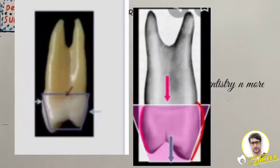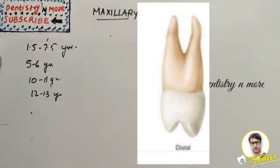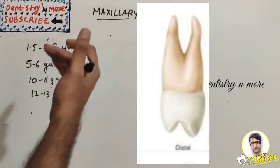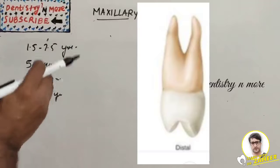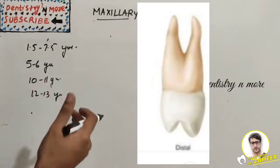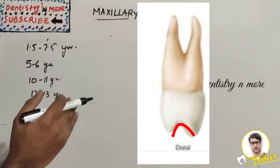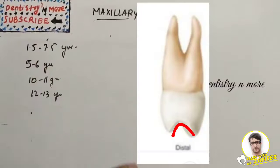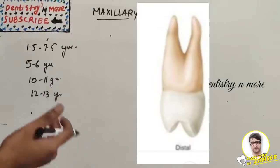From the distal aspect, there is no developmental depression or groove; instead it is convex at almost all points. The curvature of the cervical line is less on this aspect compared to the mesial. The contact area is near the junction of occlusal and middle third. The distal side is remarkably similar to the mesial surface, although slightly shorter occlusogingivally. The lingual margin is almost symmetrical and quite convex, especially in the middle third where the height of contour is located. There is normally no marginal groove on the distal.